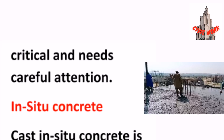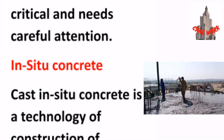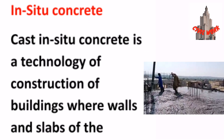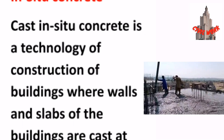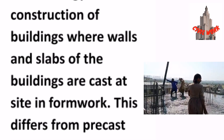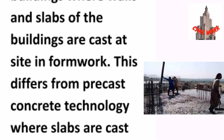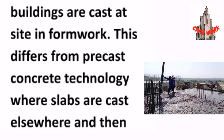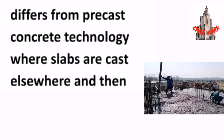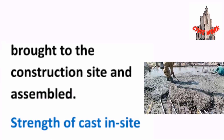Details at the joint become very critical and need careful attention. Cast-in-situ concrete is a technology of construction where walls and slabs of buildings are cast at the site in formwork. This differs from precast concrete technology where slabs are cast elsewhere and then brought to the construction site and assembled.